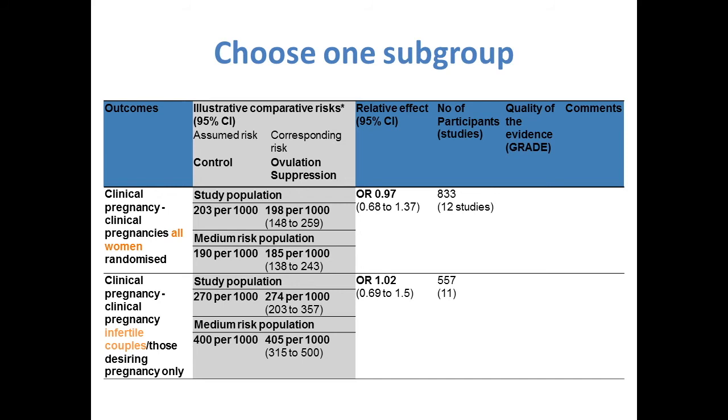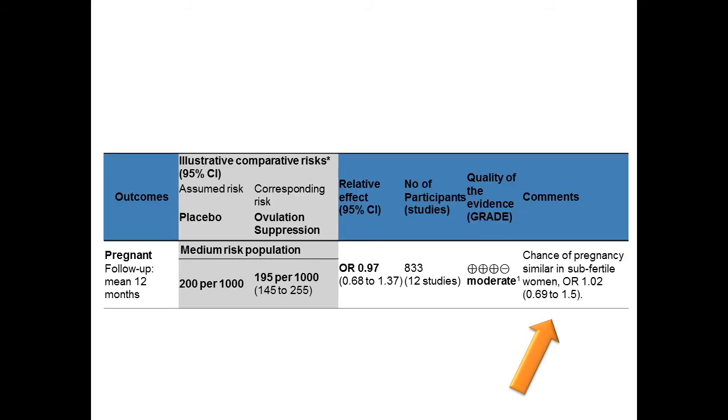In this case, the information from the meta-analysis for the outcome pregnancy was automatically imported into GradePro by subgroup. The first subgroup was all women, and the second subgroup was infertile couples. The authors decided to present the results for one subgroup, all women who were pregnant, and then add a comment or footnote about the other subgroup.